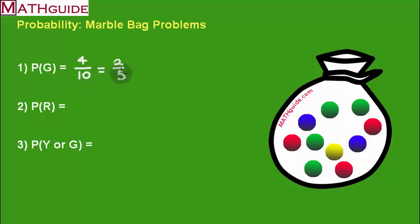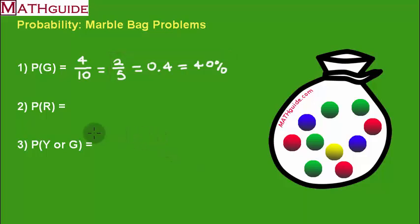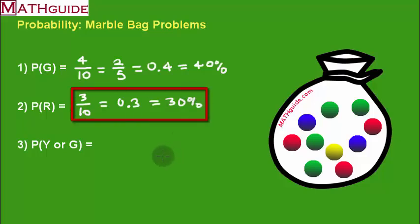We could always reduce 4/10 to 2/5. We could also get a decimal value — 2 divided by 5 is 0.4. We could even write this as a percent by moving the decimal point two places over, giving us 40%. So we can write the probability three different ways: fraction, decimal, percent. For the second problem, there are 3 red marbles out of 10, which is 0.3 or 30%.